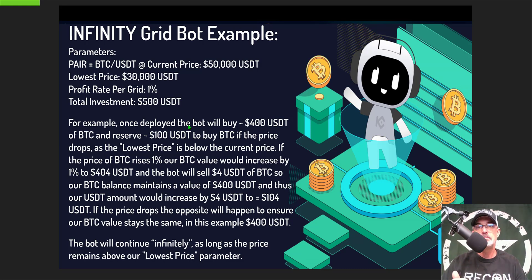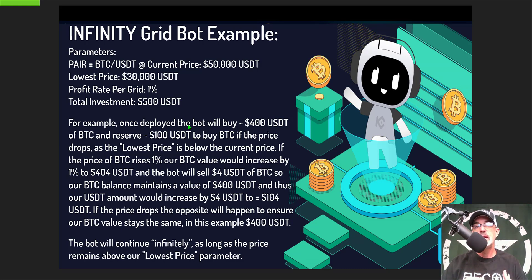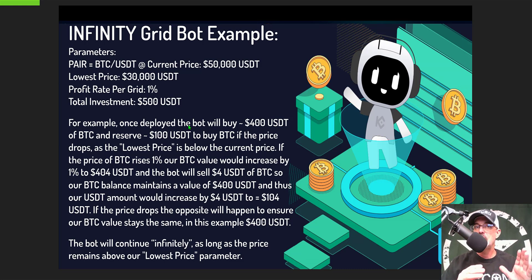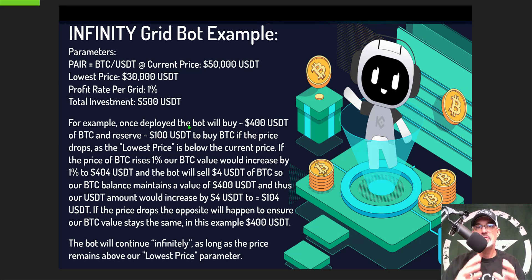On the flip side, if the price drops, the bot buys 1% more BTC with our USDT balance to maintain that $400 USDT value. This continues infinitely as long as the price stays above the lower limit. There is no upper limit to worry about — the bot will trail the price upward as high as Bitcoin goes. This strategy is probably best deployed in a bull market where the price is just beginning an uptrend, and BTC just had a pretty big sell-off, so now could be an opportunity to get in.